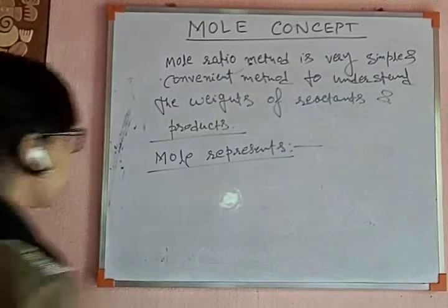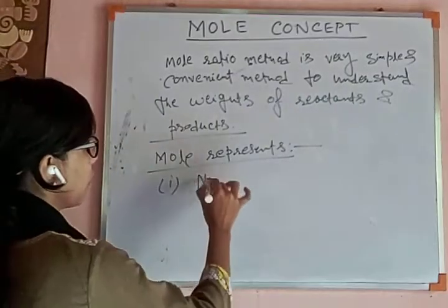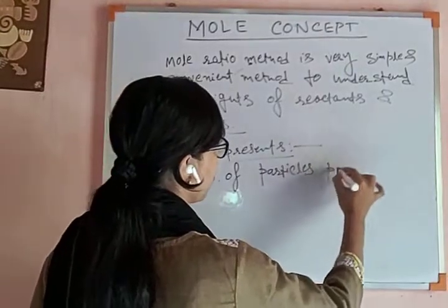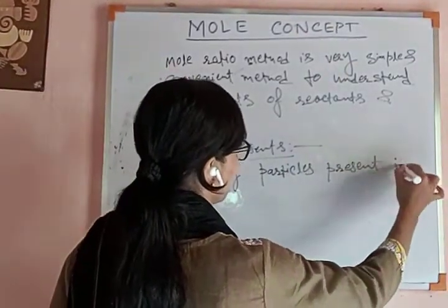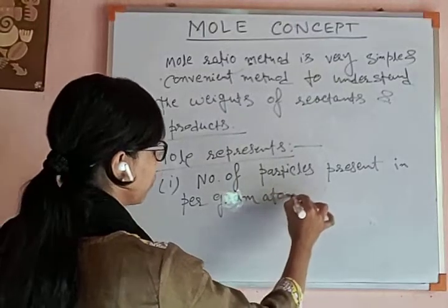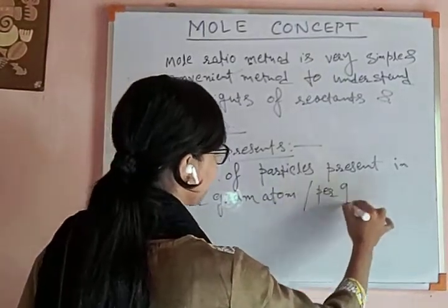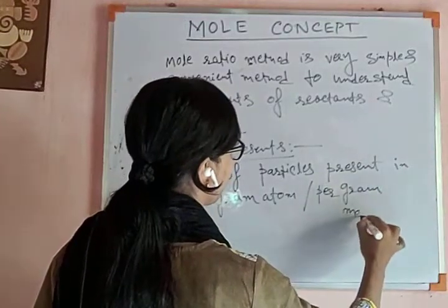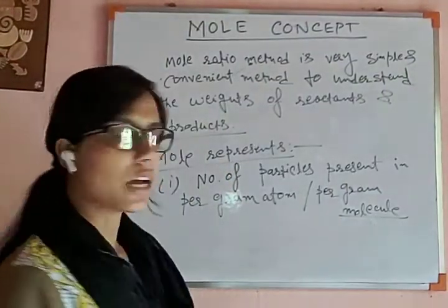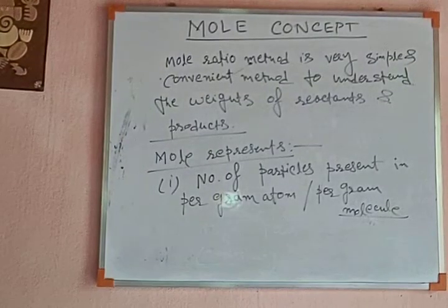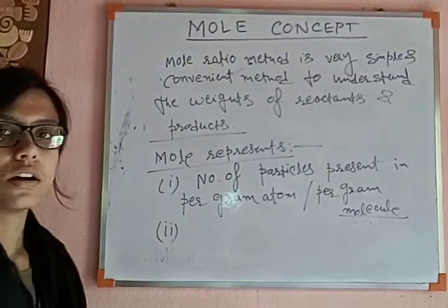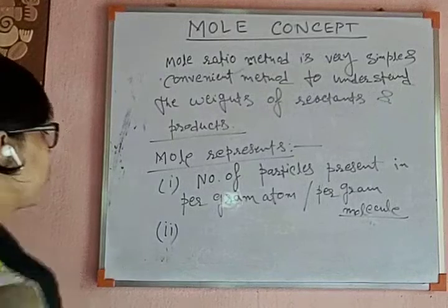So we can write that mole represents the number of particles present per gram atom. The first is the number of atoms and the second is the weight of the substance. These two things we can understand from the term mole.